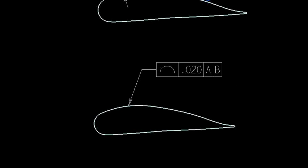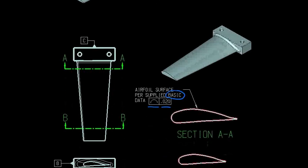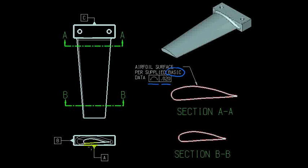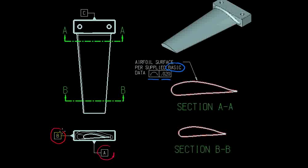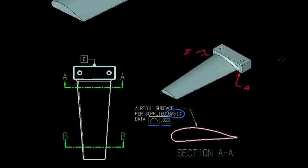We're now going to apply datums in detail for the first time. Going back to our drawing, we can see there are three datum frames on this drawing and we're going to be concerned with two of them: datum A and datum B. Datum A is the bottom surface of that root or mounting block, and datum B is the left edge surface.